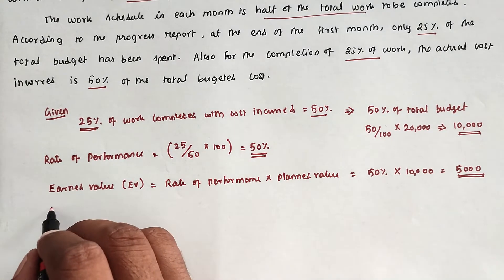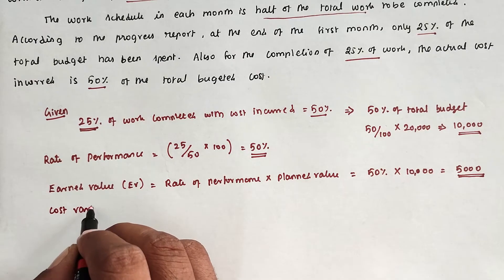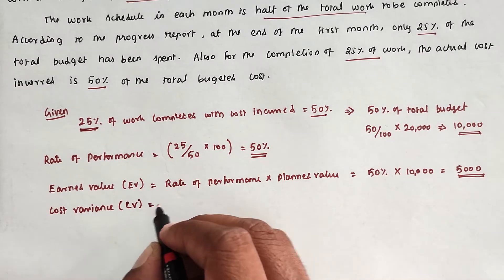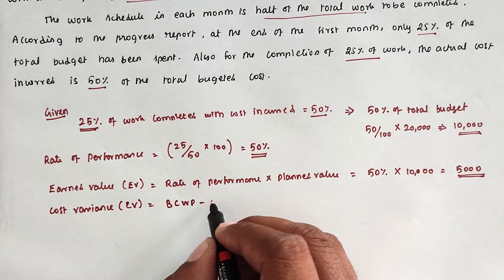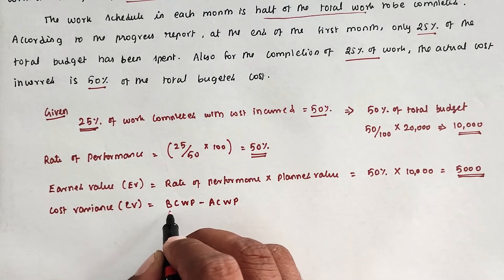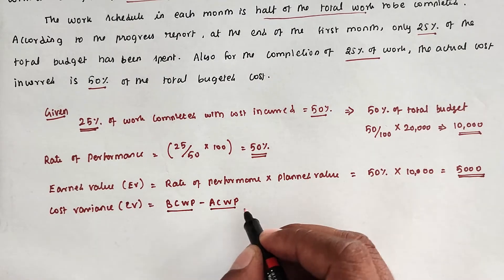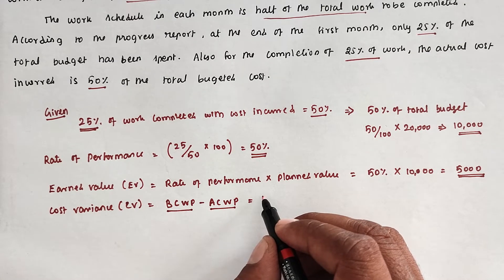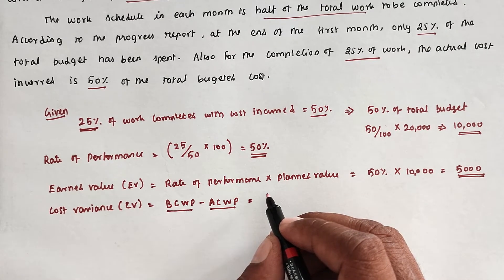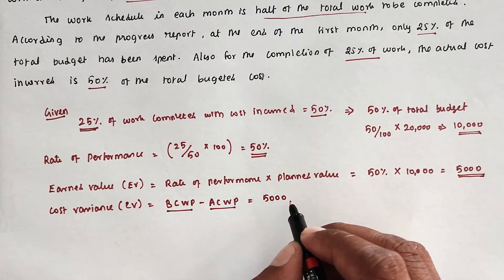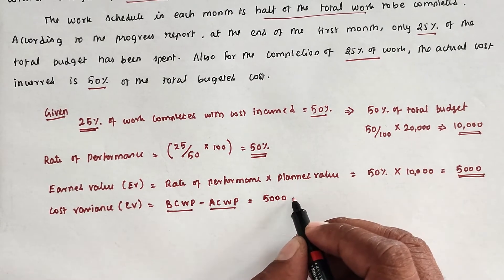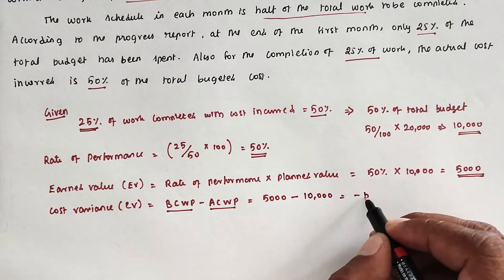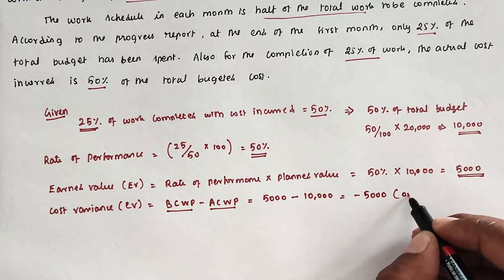Next is Cost Variance (CV) = BCWP minus ACWP, that is Budgeted Cost of Work Performed minus Actual Cost of Work Performed. The budgeted cost of work performed is 5,000, which is what was allowed to spend in the first month, minus the actual cost of 10,000, giving minus 5,000. This means the cost is over-utilized.